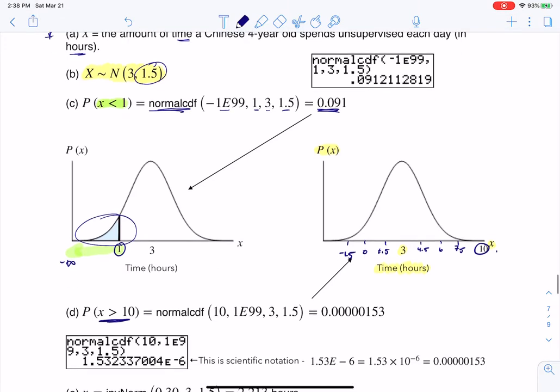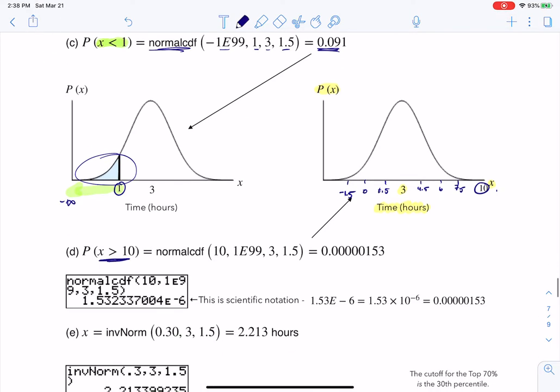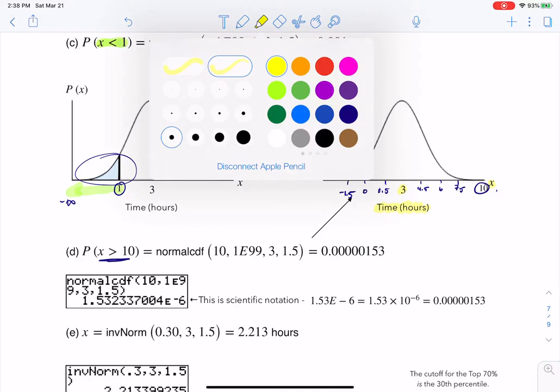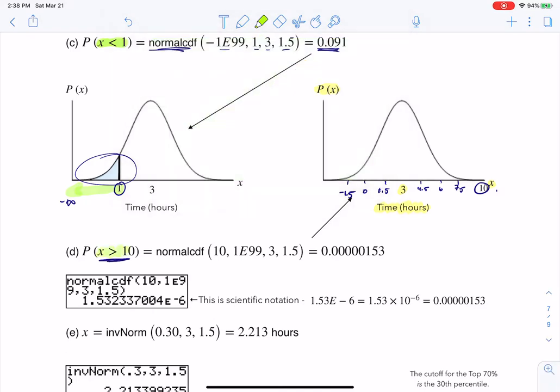And then because it's saying more than 10, I'm going to have a greater than symbol. So if I'm going to have that greater than symbol, you can start to feel out that I'm not going to shade much area under this curve. There's just not that much to the right. But technically speaking, if I'm going greater than 10, I'm going from 10 to infinity, mean standard deviation.